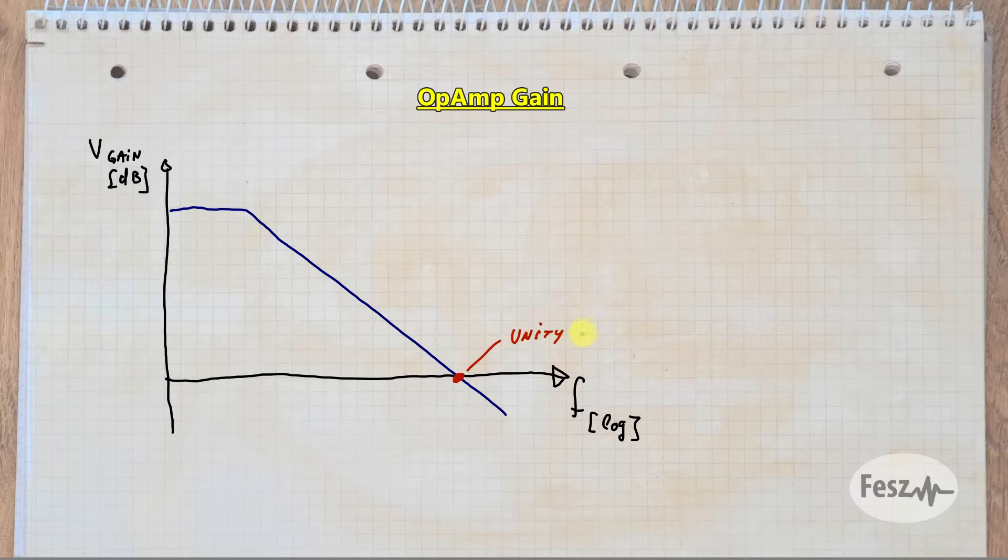So you will either find the unity gain bandwidth, which is the point where the curve intersects the axis, the frequency at which the gain is 1, or another way of expressing this is by the gain bandwidth product, which shows the slope of the line. In our case, with the NE5532, the unity gain is occurring at 10MHz, but knowing that the gain bandwidth product is also 10MHz, let's just calculate the gain at different frequencies.